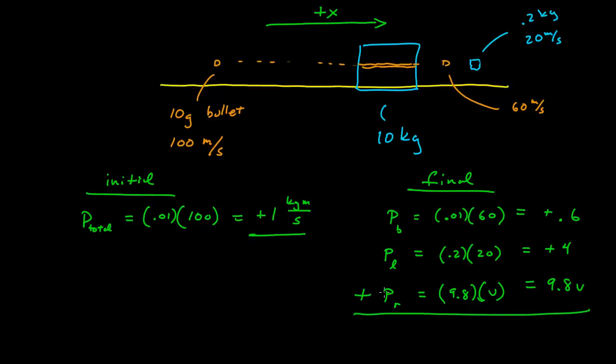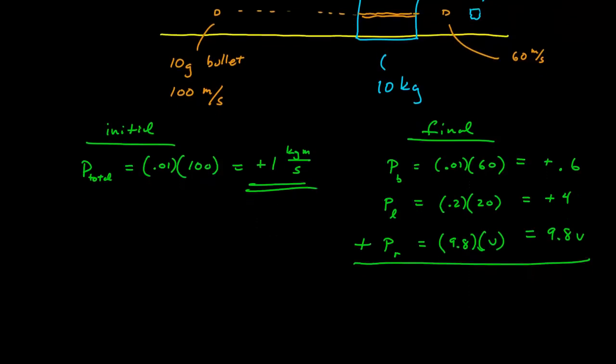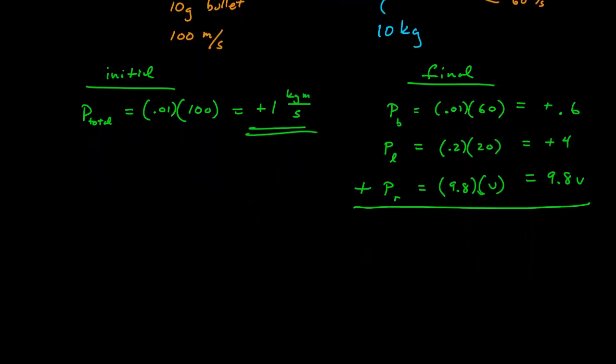And so the sum of all of this must equal 1. So let's solve our math. 1 is equal to 4.6 plus 9.8v. Subtract 4.6, 9.8v is equal to negative 3.6, or v is equal to negative 0.37 meters per second.